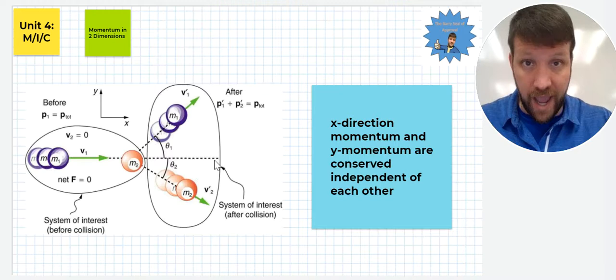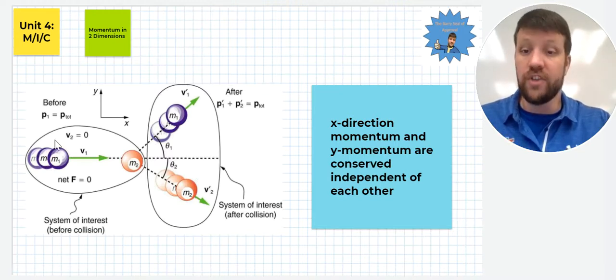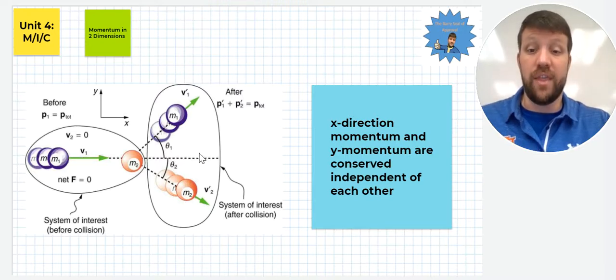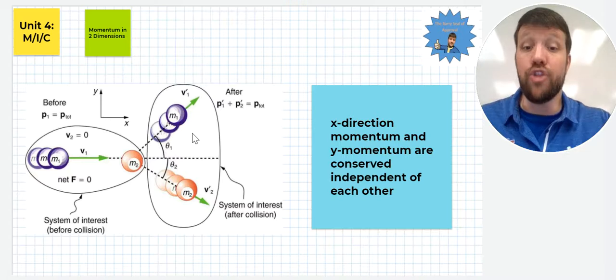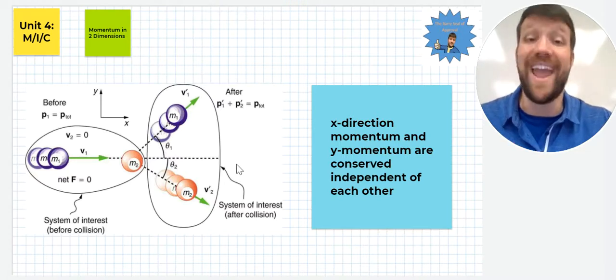The important thing here is we see there's no vertical momentum before in this collision. That doesn't mean that there's not some after. The combined after will be zero. So there's no momentum in the Y direction before this collision, but after, mass one has a positive Y momentum, mass two has a negative Y momentum. Those two will be equal and opposite. They will essentially cancel out overall.